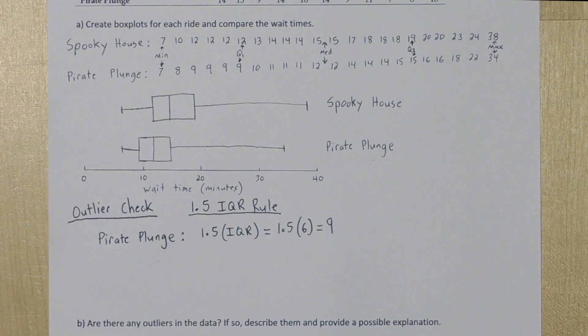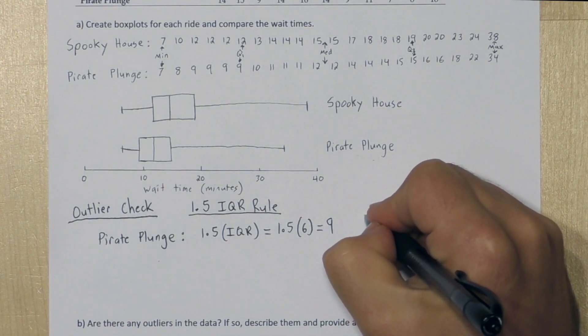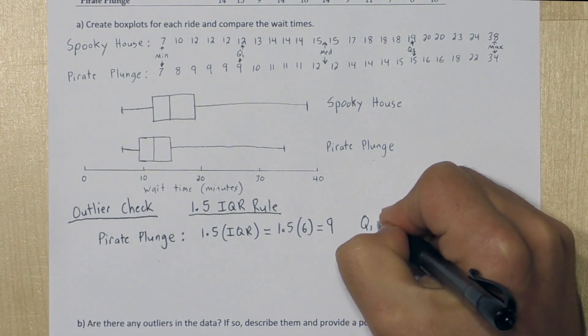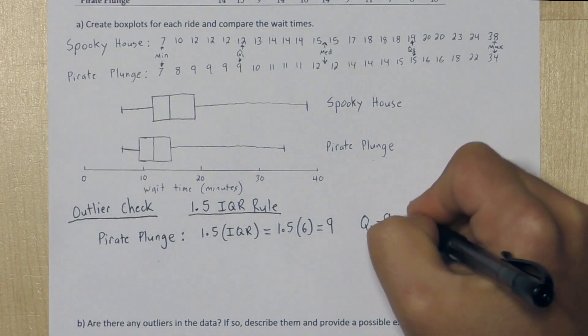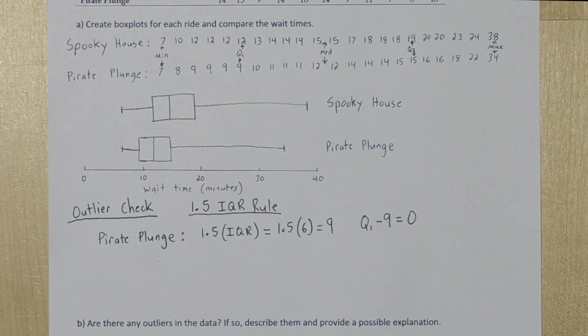Now here's how we use that 9. Let's start by looking for lower outliers. We start with quartile 1, and we're going to subtract the 9 from it. So quartile 1 for Pirate Plunge is 9, minus 9 is 0. Now since none of the waiting times are lower than 0, we have no lower outliers.